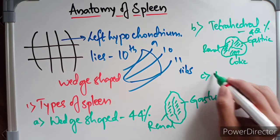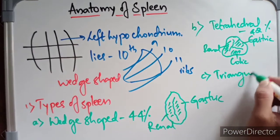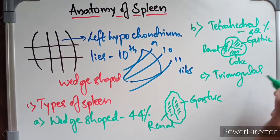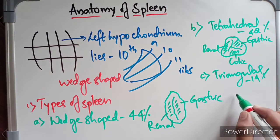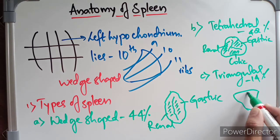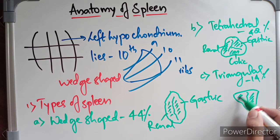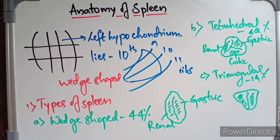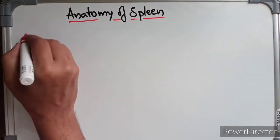The third type is triangular, which occurs in about 14% of individuals. The triangular spleen has an intermediate border, a gastric impression, and a renal impression.